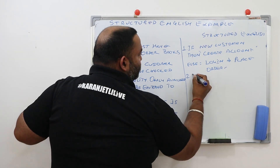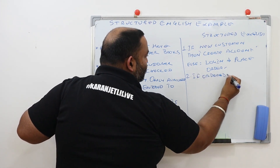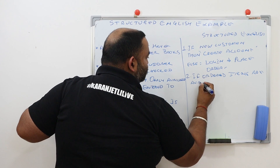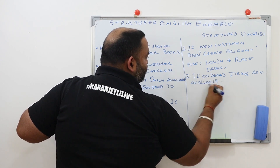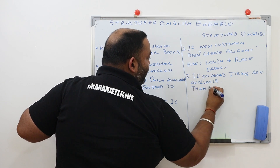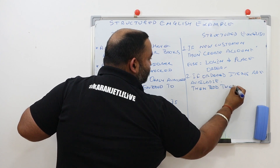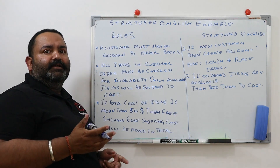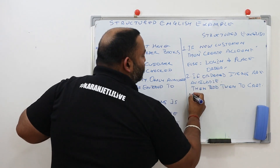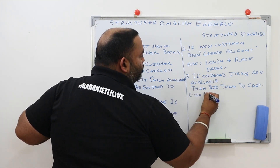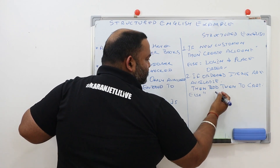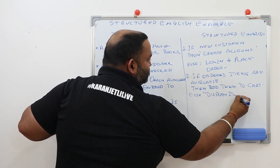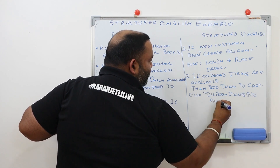Rule number two: all the items in the customer order must be checked for availability. In structured English: if ordered items are available, then add them to the cart; else display the message 'items not available'.